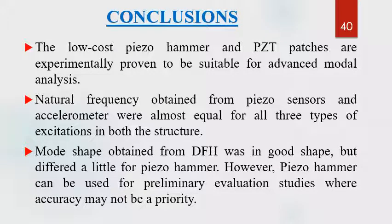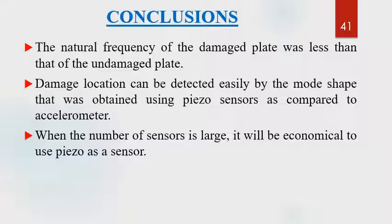Based on the results, conclusions are as follows: low-cost piezo hammer and PZT patches are experimentally proven suitable for advanced modal analysis. Natural frequency obtained from piezo sensors and accelerometer were almost equal for all three types of excitation in both structures. Mode shapes obtained using Dytran force hammer were in good shape but differed a little for piezo hammer; however, piezo hammer can be used for preliminary evaluation where accuracy may not be a priority. The natural frequency of the damaged plate was less than that of the undamaged plate. Damage location can be detected more easily from mode shapes obtained using piezo sensors due to a sharp change in curvature. When the number of sensors is less, it is more economical to use piezo sensors compared to accelerometers.